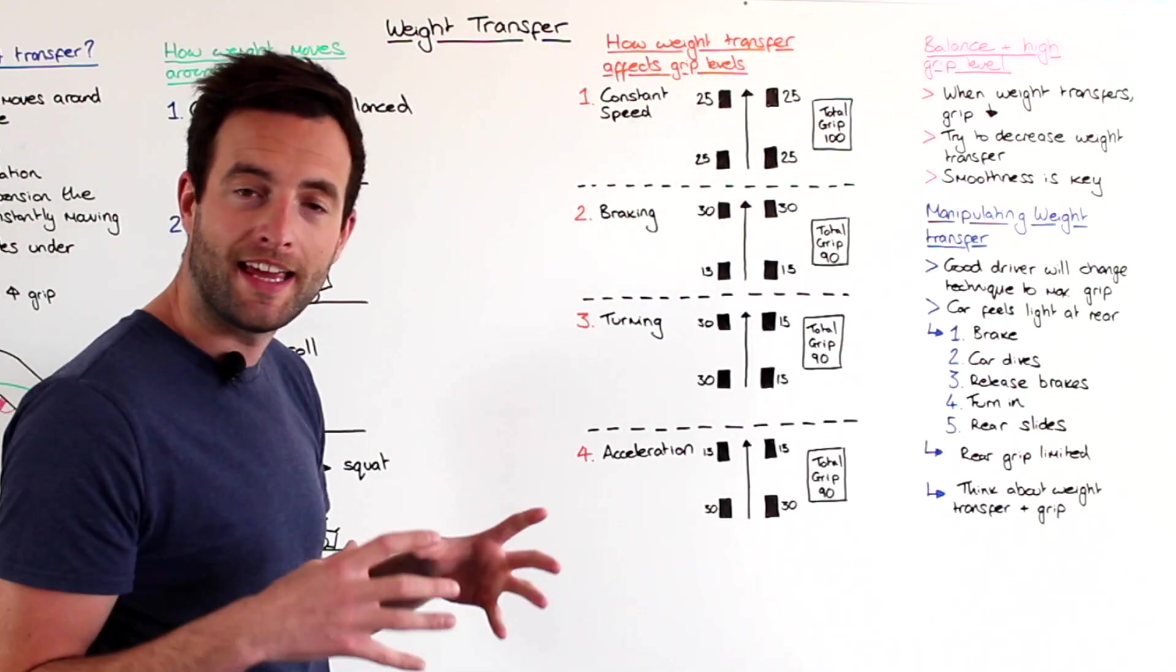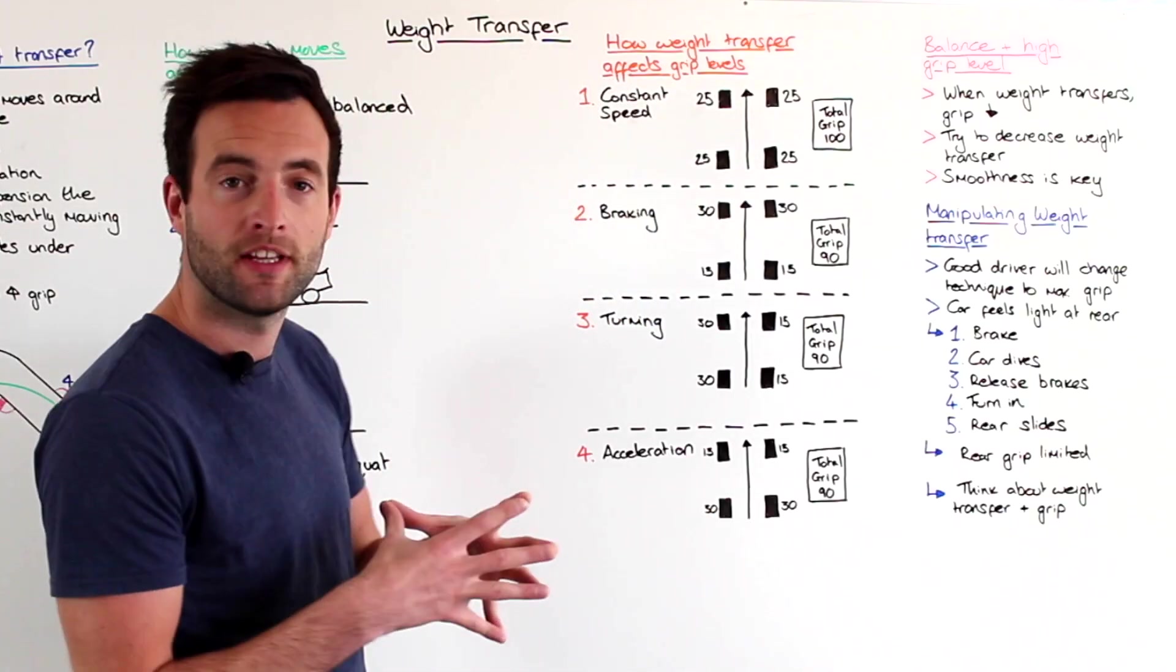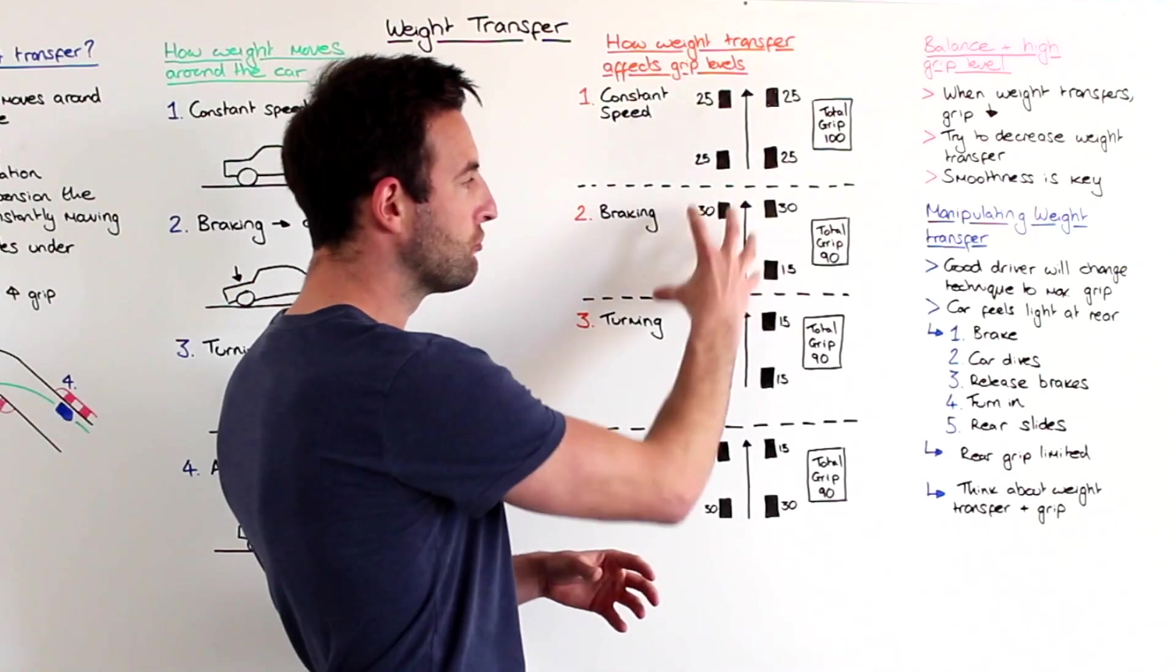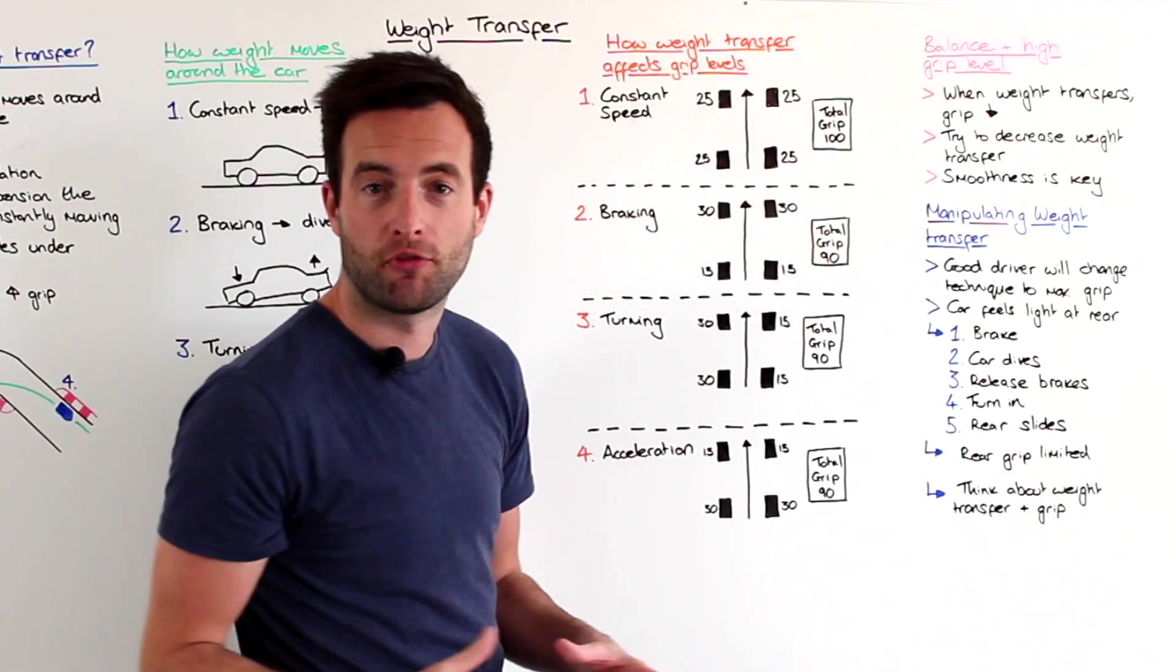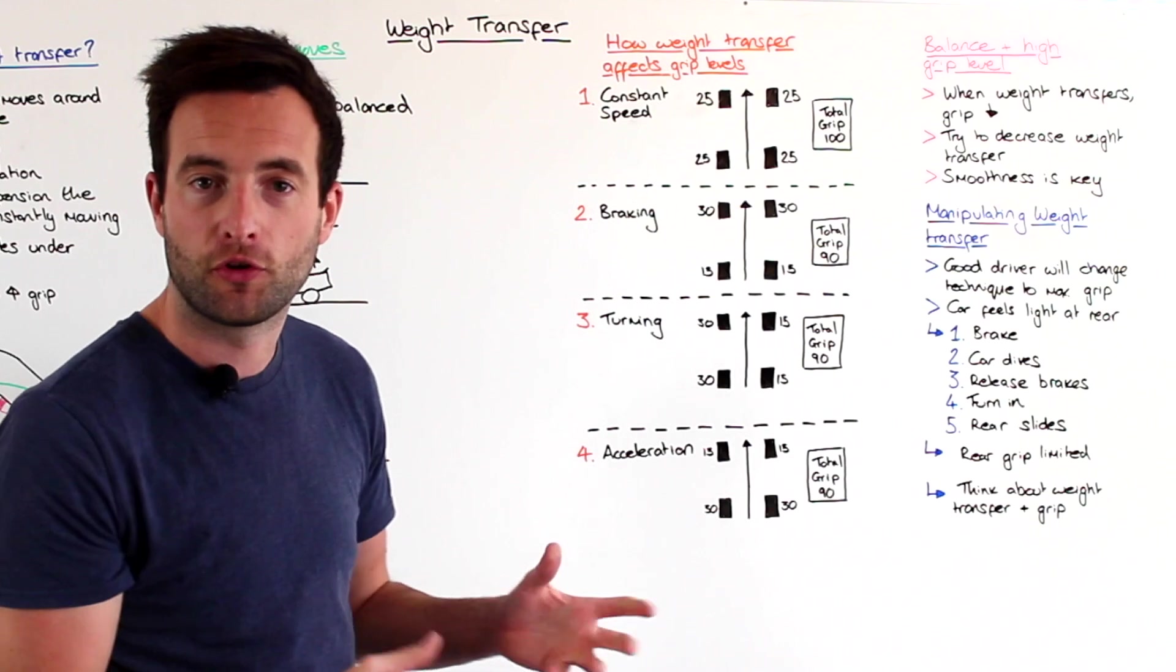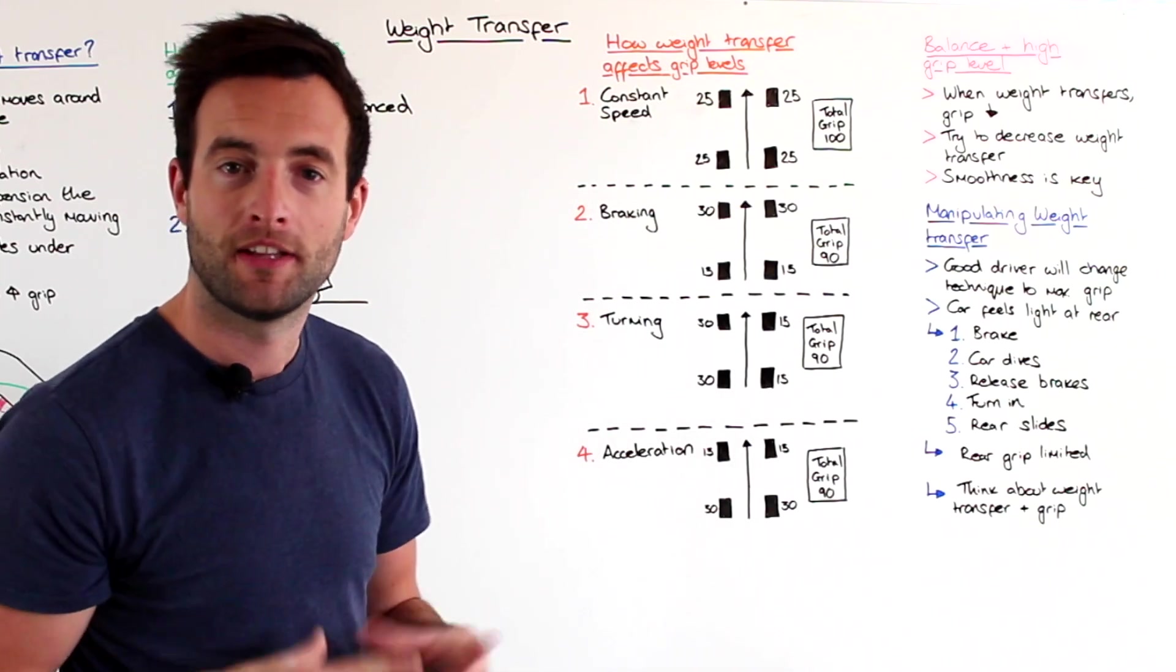So if you were to turn the car into the corner at this point, it would be completely unbalanced. The grip is unbalanced because there's a lot more grip at the front of the car. So if you turn the car into the corner at this point, you would likely spin out of control.